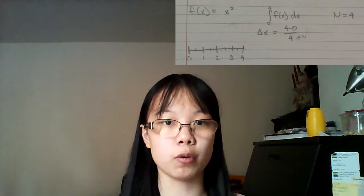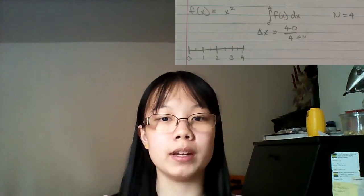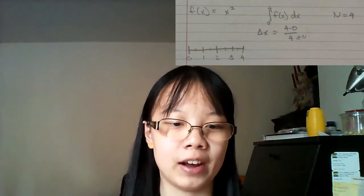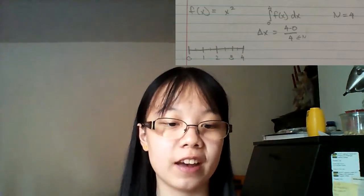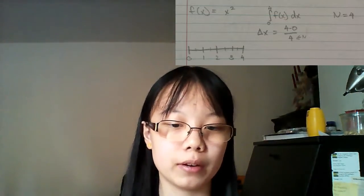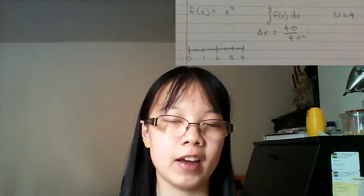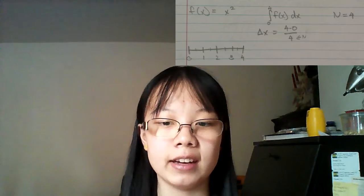So, now we know the equations, let's do an example. On the screen, I have an equation that we'll be doing to show this mini hack I found out. So, the equation is f of x equals x squared, and the integral is from 0 to 4 f of x dx, and n is 4.